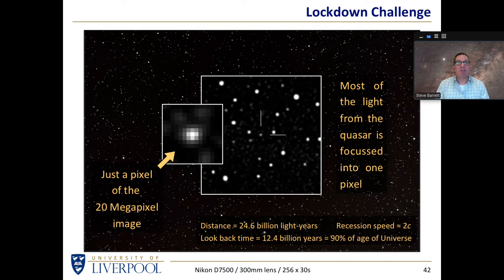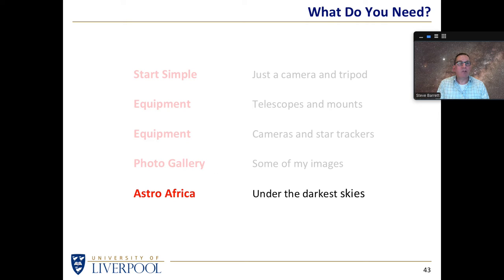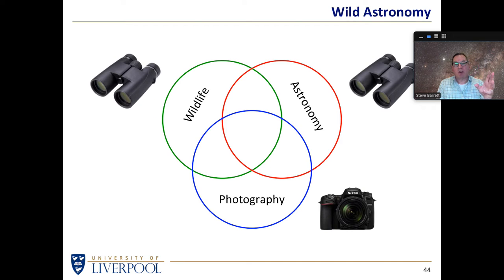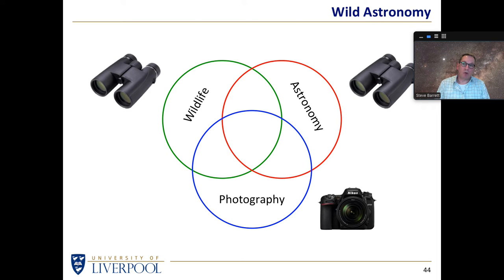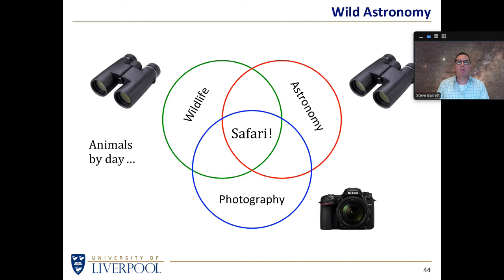Let's look at the last section — what you can do if you get the darkest of skies. I'm interested in astronomy and photography, and of course the overlap is astrophotography. But I'm also interested in taking pictures of animals and photographing wildlife. So with friends who have similar interests, I have been on safari. On safari you can watch and photograph animals by day, and watch and photograph stars by night. Don't waste your time in Africa sleeping when you could be taking pictures of animals or the sky — sleep when you get home.